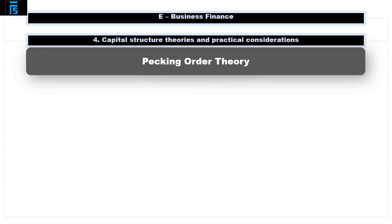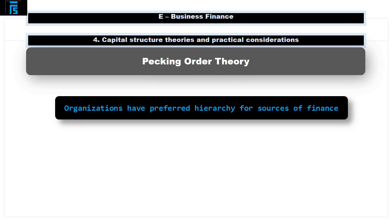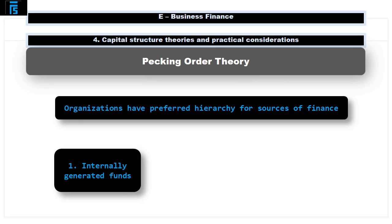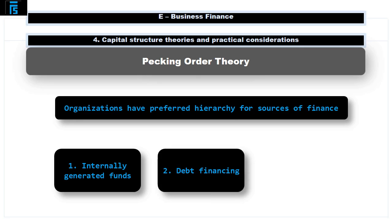Now let's look at the pecking order theory. This theory states that organisations have a preferred hierarchy for financing. They will firstly use internally generated funds like retained earnings, which are available with no transaction costs such as administration fees. Then the company will look to use debt financing. Debt has many benefits: it is cheap, it can reduce the WACC, and if it is secured by an asset it is even cheaper. There is also far less work involved in raising debt finance than equity finance.